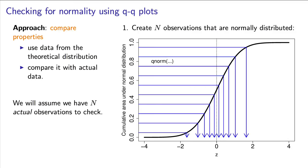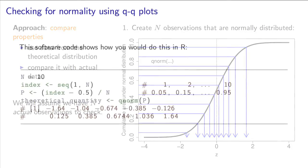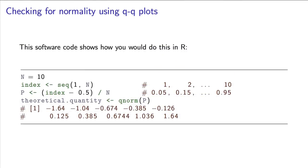Now take these n evenly spaced points and move them across the plot and down again to locate where they are on the z-axis. We can use the q-norm function to do that. So now we have n values of z from a pure normal distribution.